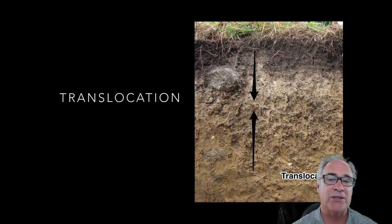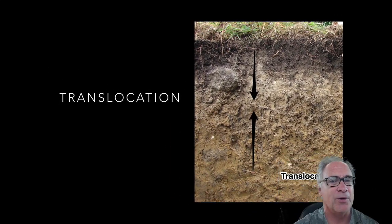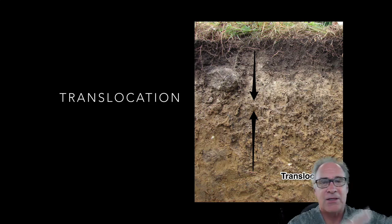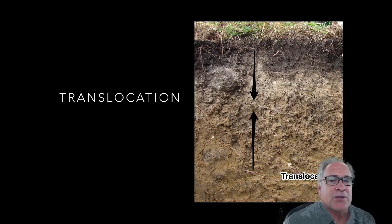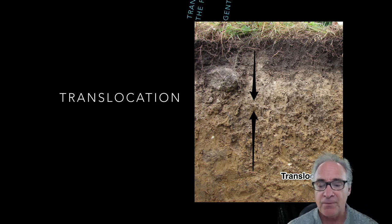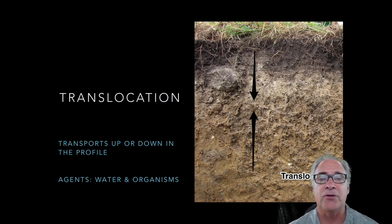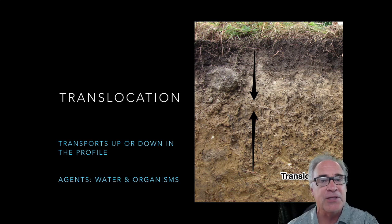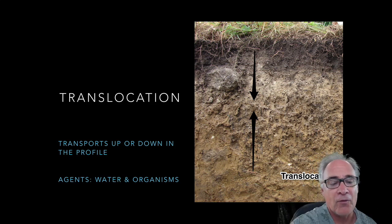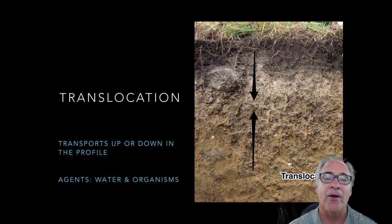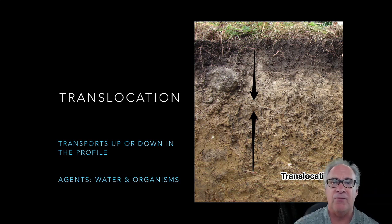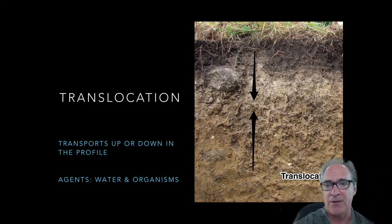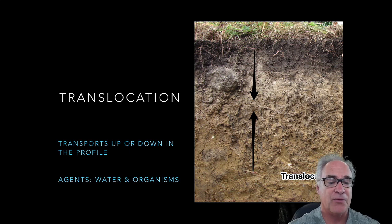The third process is translocation. Even though I present them in order, understand this is all going on in a cyclic manner, so it doesn't necessarily happen in any particular sequence — it's going on from day to day. Translocation is all about the transportation of materials from one part of the profile to another. Mainly it's water and other organisms that move things around, which is why you don't see nice, straight, even lines between one horizon and the next.